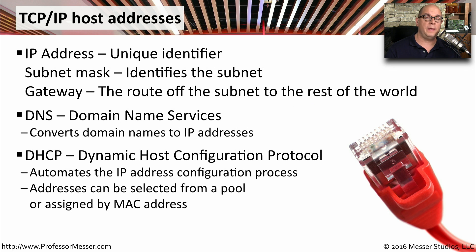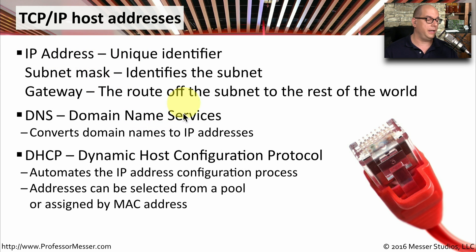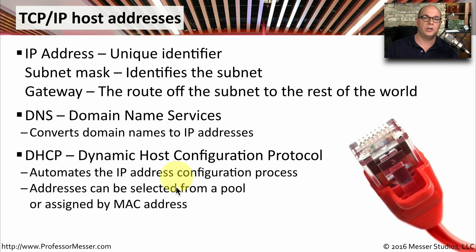You can see now why DHCP would be the recommended setting. Instead of manually configuring all of these different IP addresses and hoping that you don't misconfigure any of them, you can simply have the DHCP server assign everything. You can even configure your DHCP server not to assign IP addresses from a large pool, but to assign a specific IP address to a specific device. This reserved address setting is usually configured in your DHCP server and associates the MAC address with an IP address, so that your web server or file server will always get the same IP address from the DHCP server.